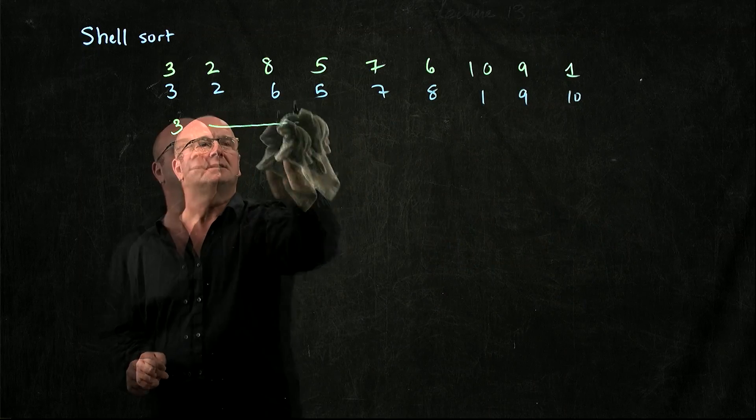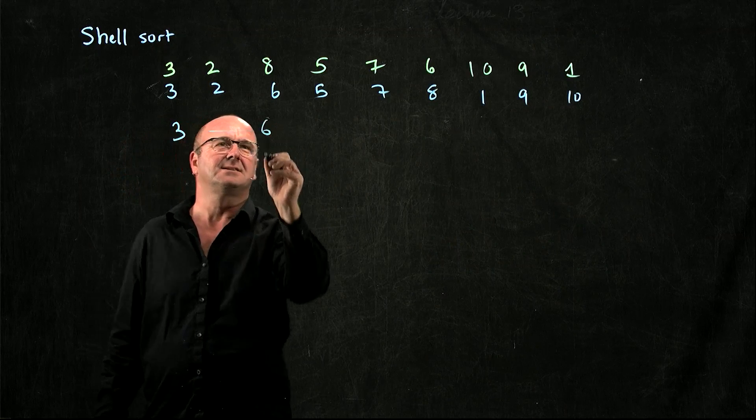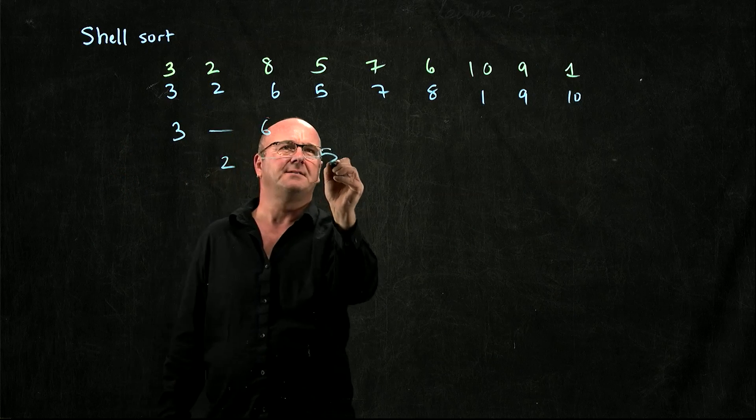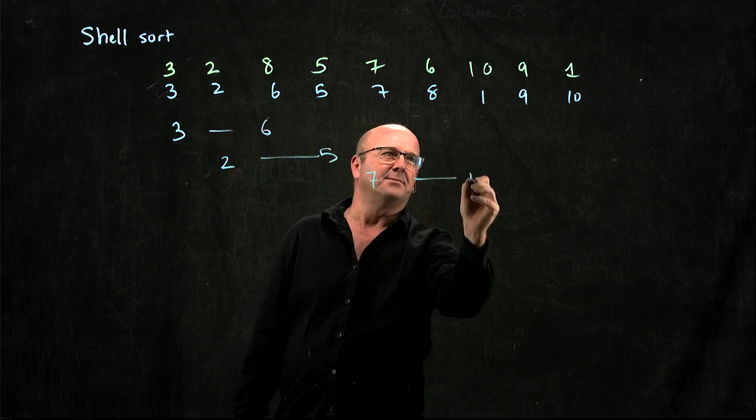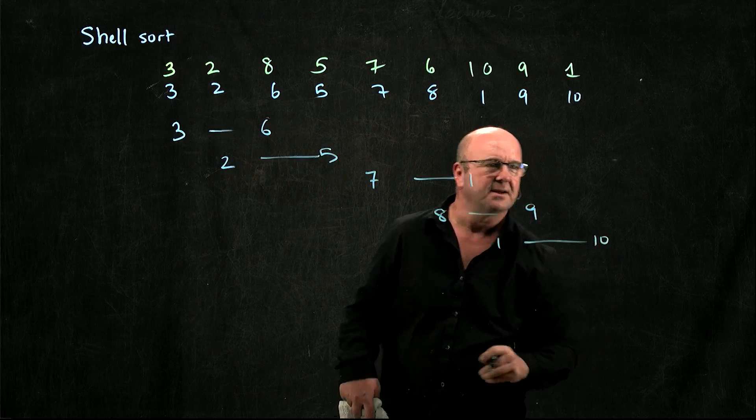So I halve my gap size. So let's have a gap of 1. So we take the 3 and the 6, the 2 and the 5, the 7 and the 1, the 8 and the 9, and the 1 and the 10.